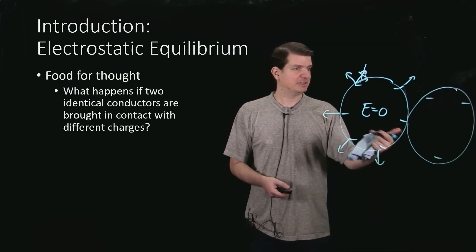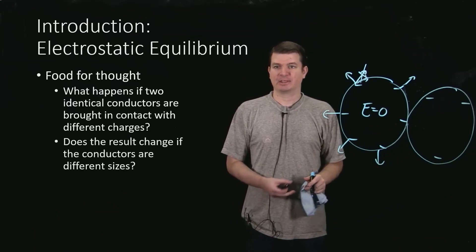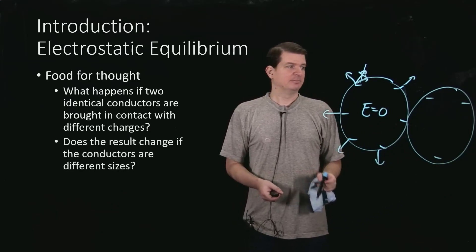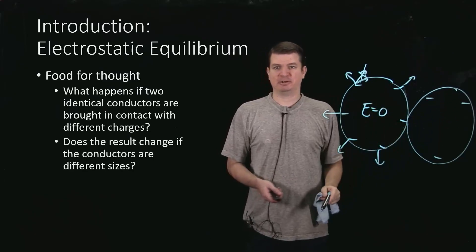How would electrostatic equilibrium make things change? And then, what would things look like once there was a new equilibrium reached? And I've sort of drawn this roughly the same size, but what if I made one bigger than the other one? How would that change things?